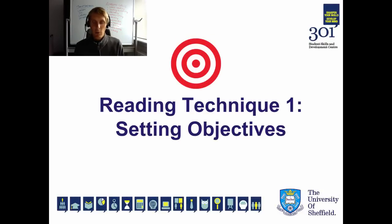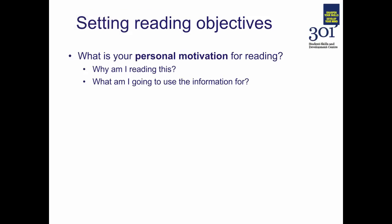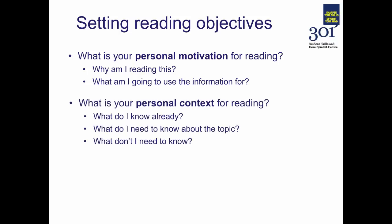Moving on to reading technique one: setting objectives. First of all, there are some key questions that you need to start off by asking yourself about the purpose of your reading. What's your personal motivation for doing the reading in the first place? Why are you reading the material that you've got? What are you going to use the information for? What's your personal context for reading — so what do you know already, what you need to know about the topic, and perhaps most importantly, what don't you need to know? This will help you to avoid wasting your time on superfluous information.